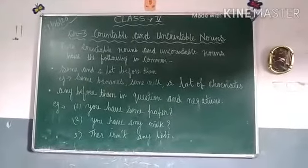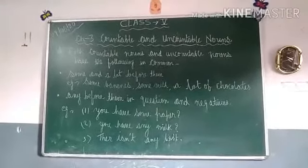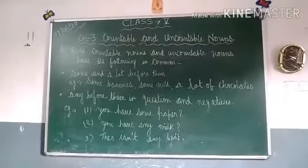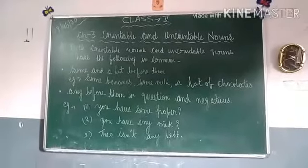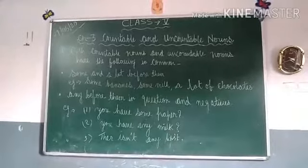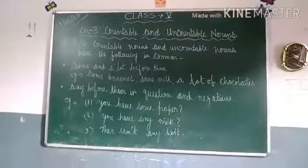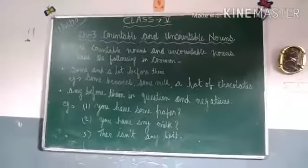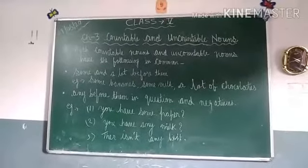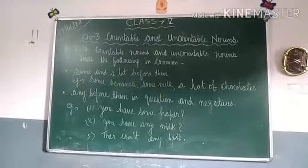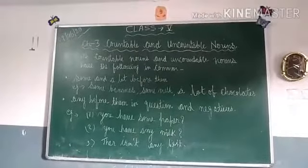There are a few things which are common in countable and uncountable nouns. Both countable and uncountable nouns take 'some' and 'a lot of' before them. Some and a lot of come in both countable and uncountable nouns. Examples: some bananas, some milk, a lot of chocolates.